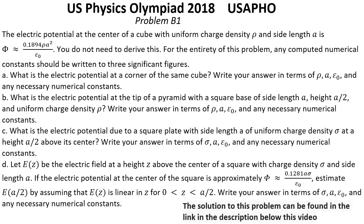The electric potential at the center of a cube with uniform charge density ρ and side length a is approximately 0.1894 ρa²/ε₀. You do not need to derive this. For the entirety of this problem, any computed numerical constants should be written to three significant figures.